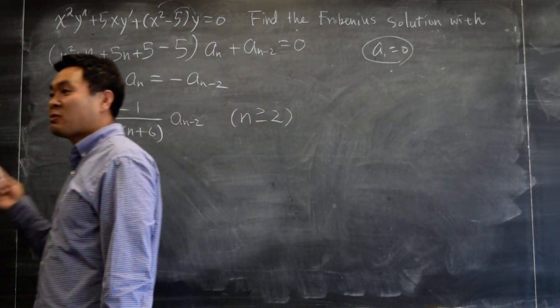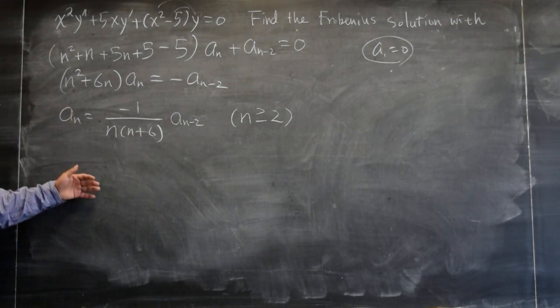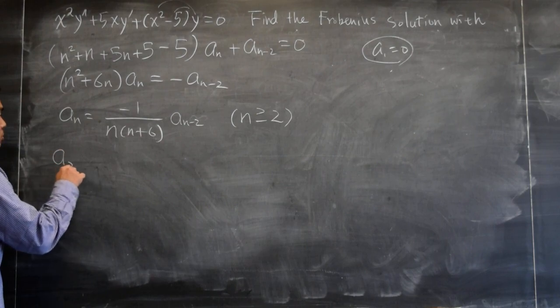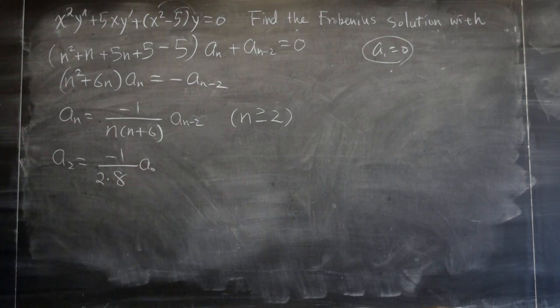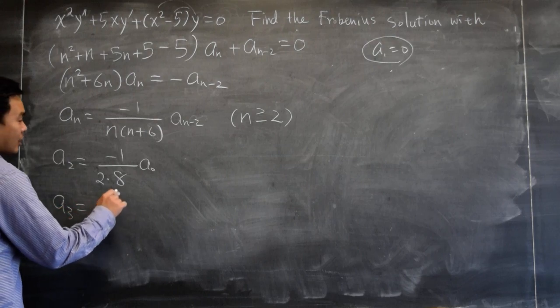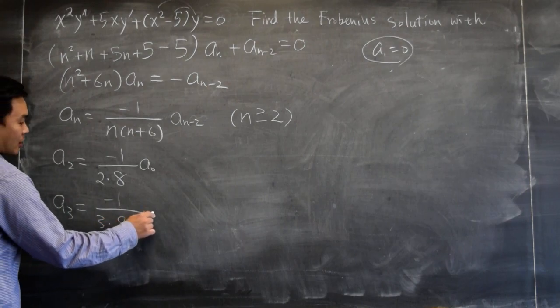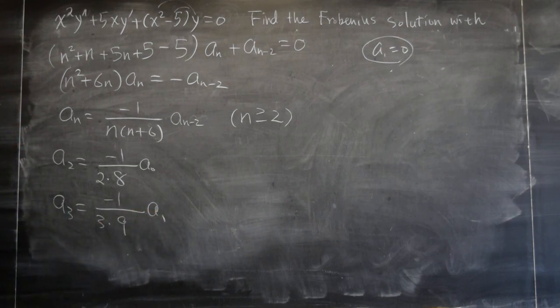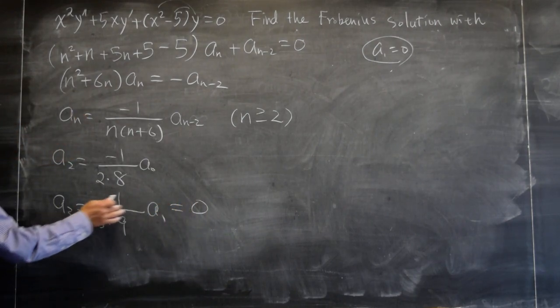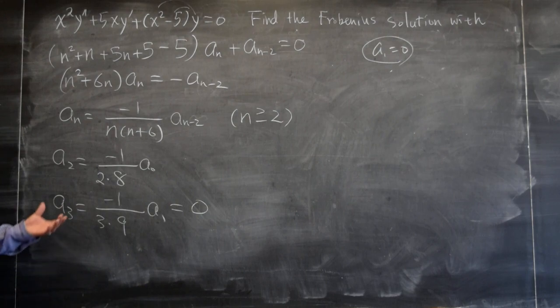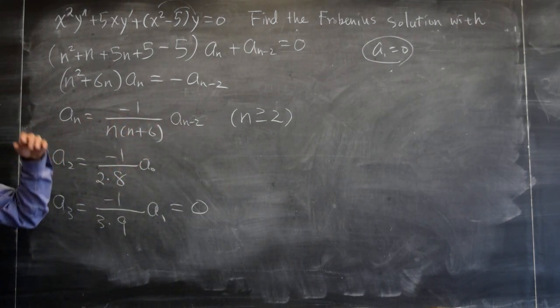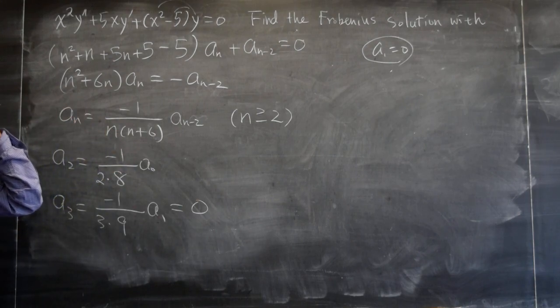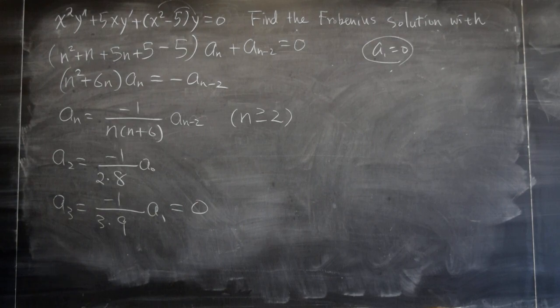So let's try to plug in n equals to 2, 3, 4, 5, 6, 7 and figure out what it means. So n equals to 2 says a2 is negative 1, 2 times 8 times a0. Now a3 is what? Negative 1 over 3 times 9 times a1. But what was a1? Zero. So what is a3? Zero. Since you're multiplying something by zero, it's zero. And the consequence you can see already that a5 is something times a3. So since a3 is zero, a5 will be zero. A7 is something times a5. So a7 will be zero. So in this case, it's not always like this. But for this question, it turns out that all the odd terms are zero.